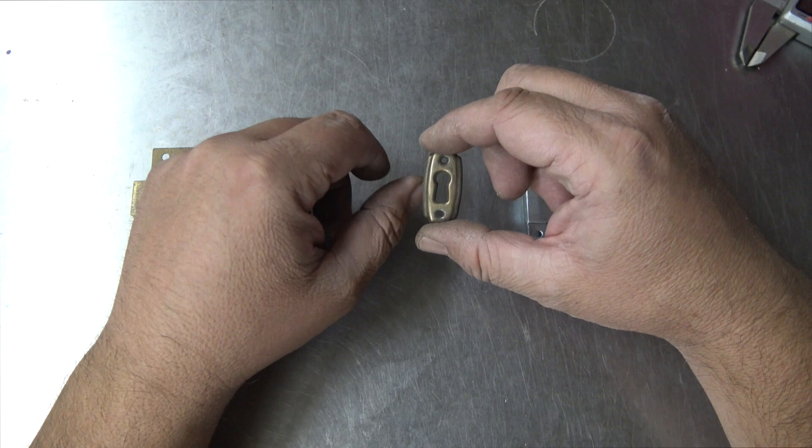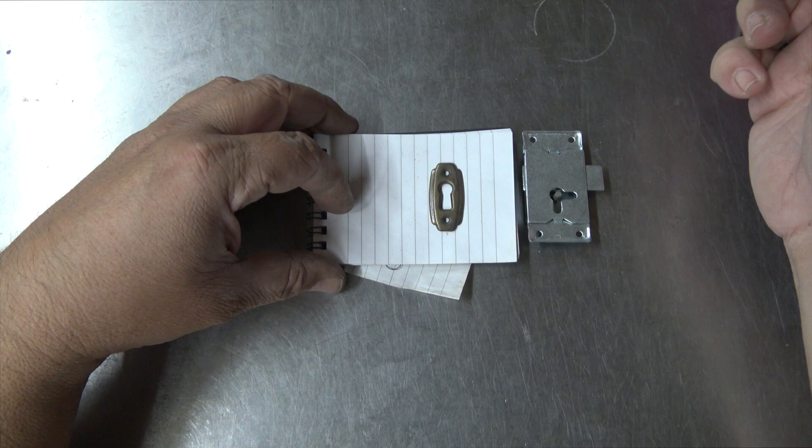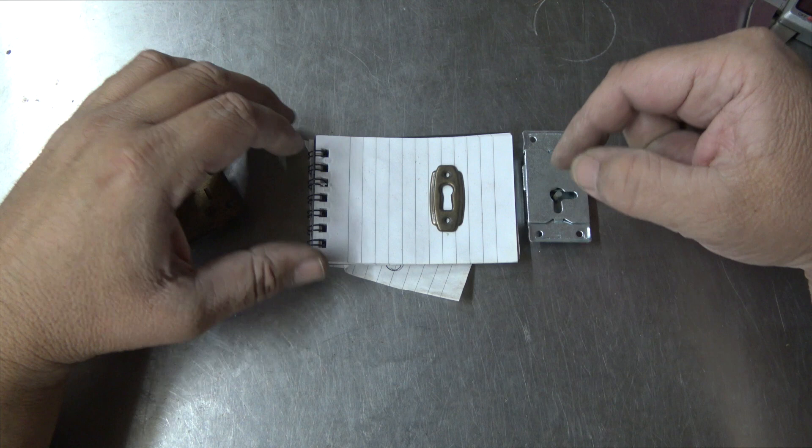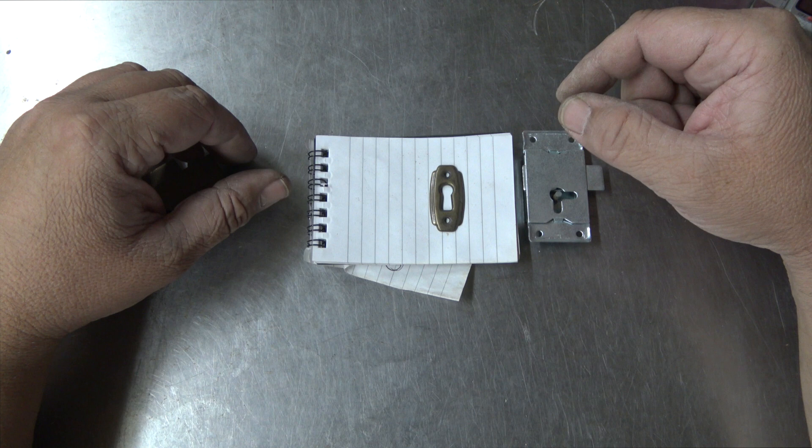A lot of people have a sideboard, a desk, a set of drawers, a cupboard or you name it basically. They've got an old piece of furniture or a piece of furniture, most of it being old, and they say I've lost the key. If I send you a photo of the keyhole, can you tell me what key it's going to be?